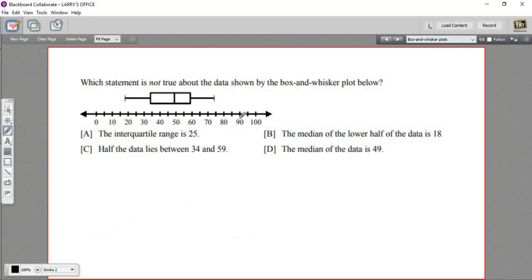All right. One more. Now, this type of problem might be tricky just because you have to find the statement that's not true. So let's remember that we're looking for the statement that's false here. Which statement is not true about the data shown by the box and whisker plot below? And let's just look at this for a second.